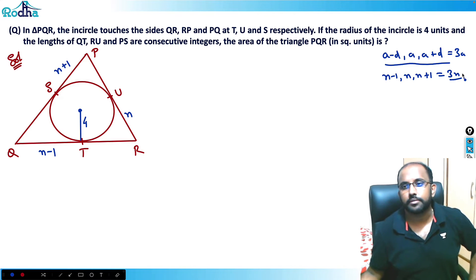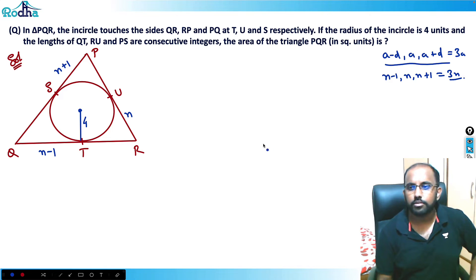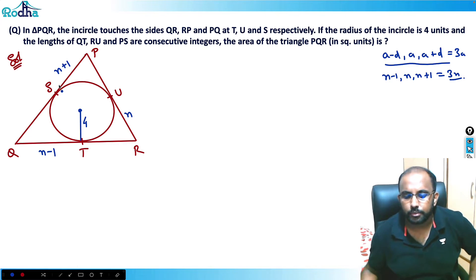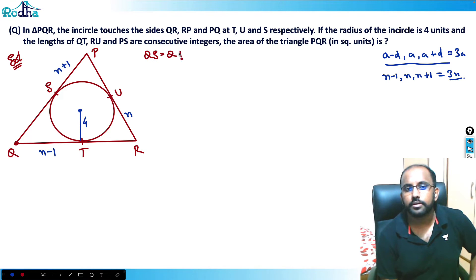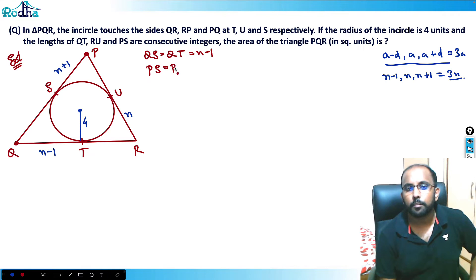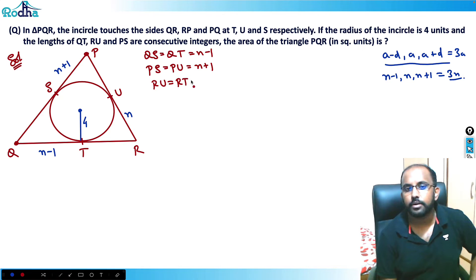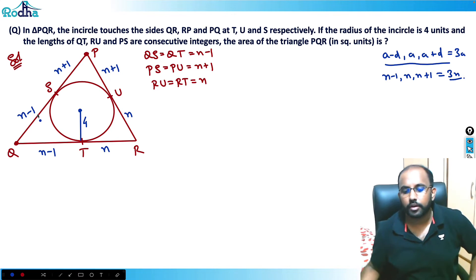So we have: the radius is four, QT = n−1, RU = n, and PS = n+1. Now I apply the property that from any external point, the two tangent lengths to a circle are equal. So QS = QT = n−1, from external point Q. From external point P, PS = PU = n+1.